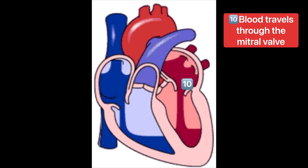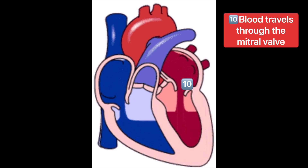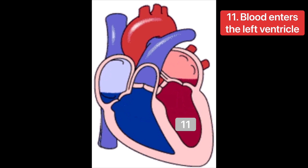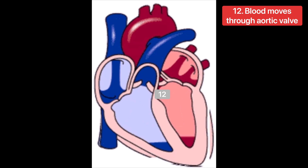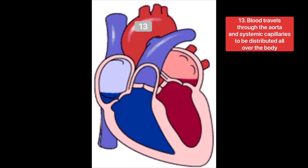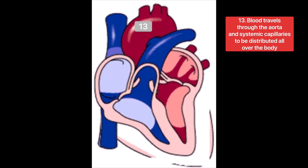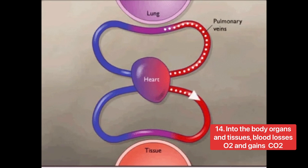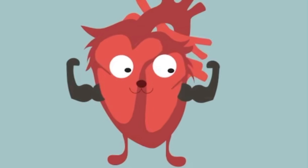Blood then travels through the mitral or bicuspid valve after atrial contraction and enters the left ventricle. After ventricular contraction, blood moves through the aortic valve and travels through the aorta and systemic arteries to be distributed to all body organs and tissue. Into the body organs and tissue, blood loses oxygen and gains carbon dioxide in the systemic capillaries. This process is repeated as long as your heart is working.